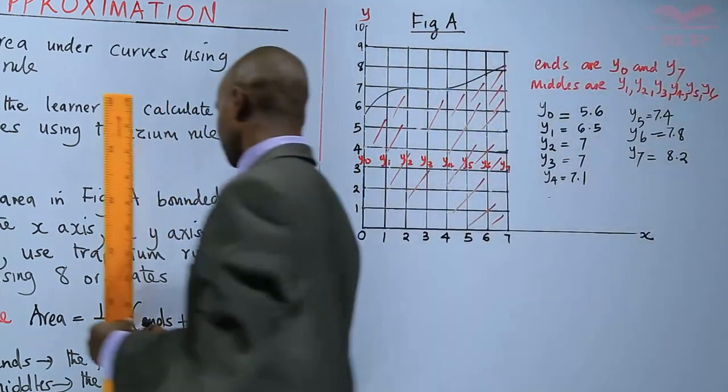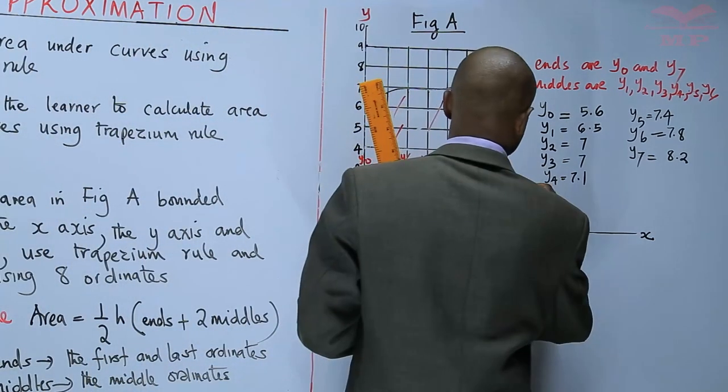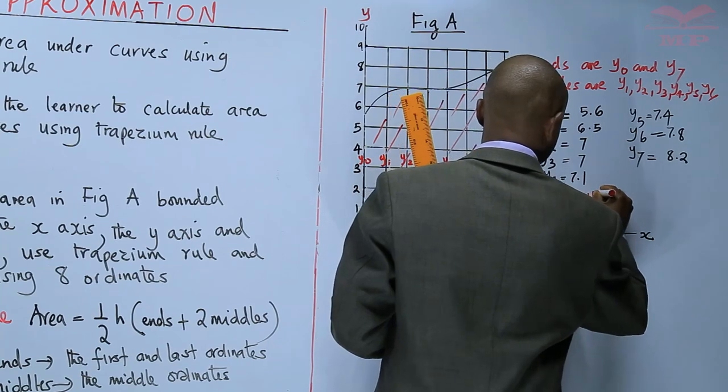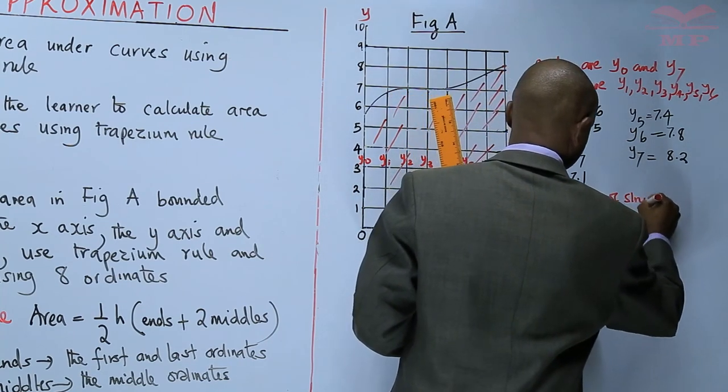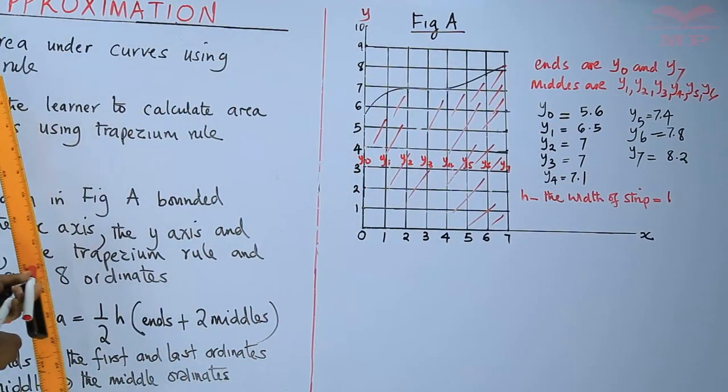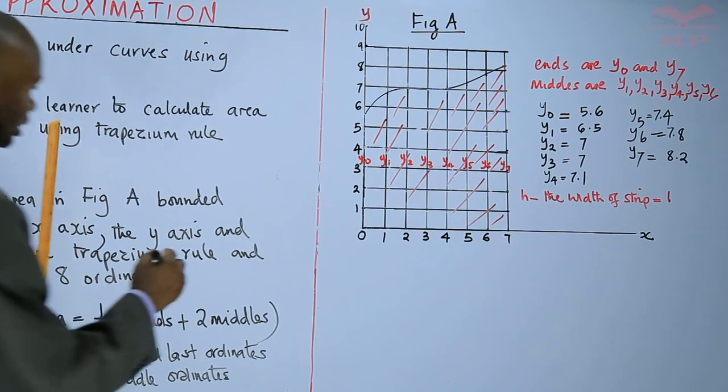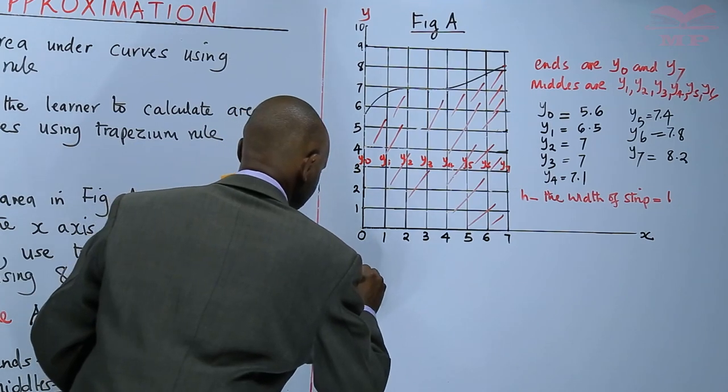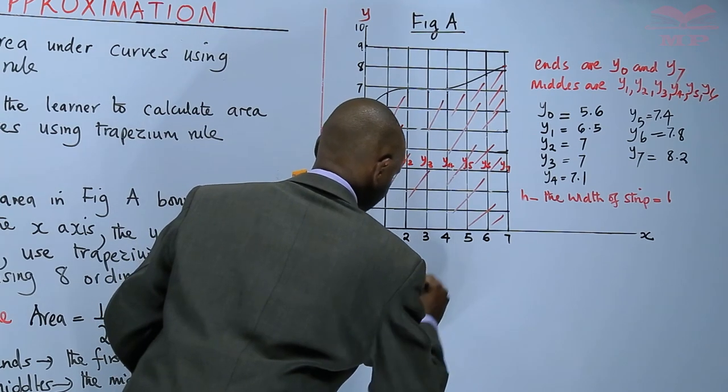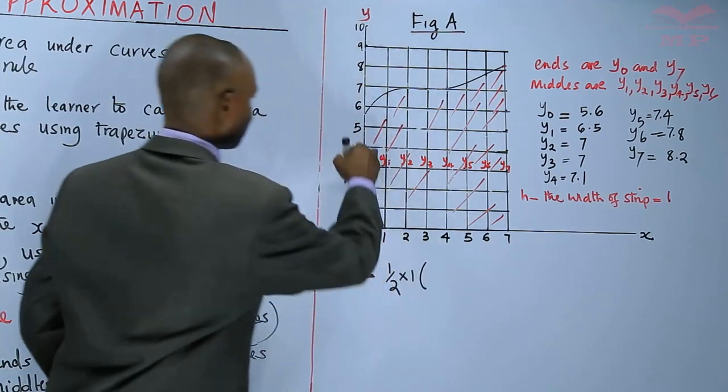Note that there is something also we have to get h. h is the width of the strip, which is equal to 1 unit. You'll come and find the area by that method. The area will be equal to 0.5 times 1. You'll now just substitute.